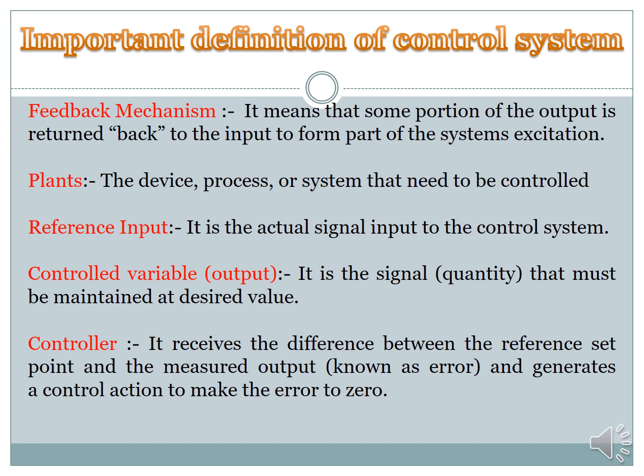Starting with the feedback mechanism — what is the feedback mechanism? It is basically when some part of the output is returned back to the input to form a part of the system excitation. This returned output is compared with the reference input, and an error signal is produced, which drives the system controller.